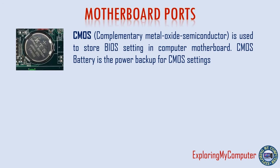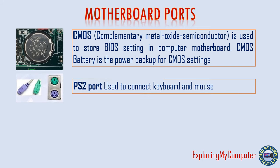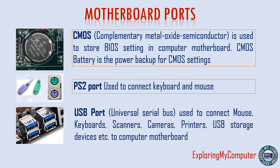CMOS battery (Complementary Metal Oxide Semiconductor) is used to store BIOS settings in the computer motherboard. The CMOS battery is the power backup for CMOS settings. PS2 port is used to connect keyboard and mouse. USB (Universal Serial Bus) is used to connect mouse, keyboards, scanners, cameras, printers and USB storage devices to the computer motherboard.